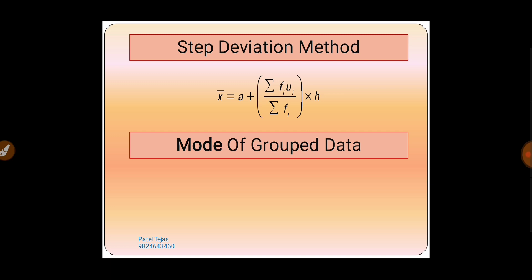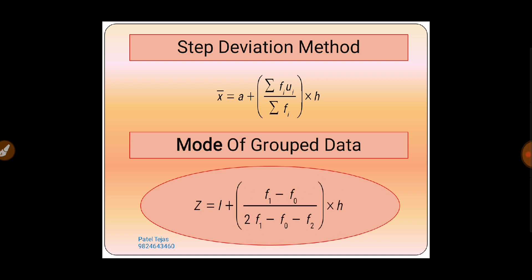Today we have to study about the mode of grouped data. The symbol of mode is capital Z. The formula of mode is: Z = l + [(f1 − f0) / (2f1 − f0 − f2)] × h. It looks long but it is a very easy formula.